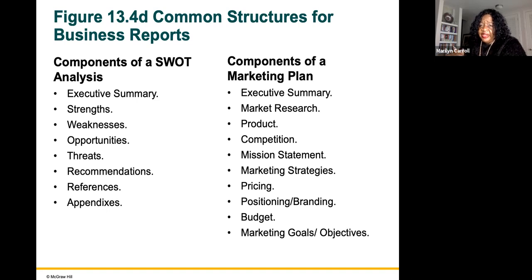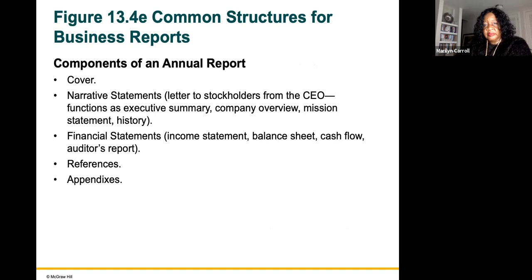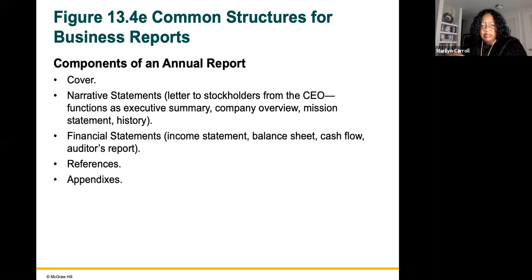Components of a marketing plan include executive summary, market research, product, competition, mission statement, marketing strategies, pricing, positioning, branding, budget, and marketing goals and objectives. Components of an annual report — which you'll see if you're part of a business, a 401k, profit sharing, or any plan with assets — include a cover, narrative statement, a letter to stockholders from the CEO functioning as an executive summary, company overview, mission statement, and history, followed by financial statements including the income statement, balance sheet, cash flow, and auditors' report. You always want the auditors' report since decisions are made based on that annual report.